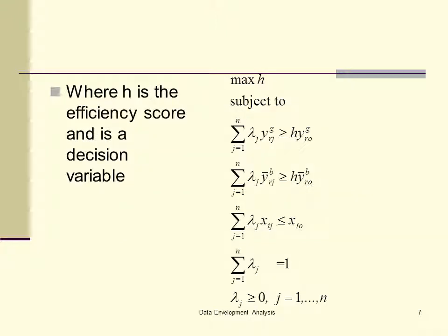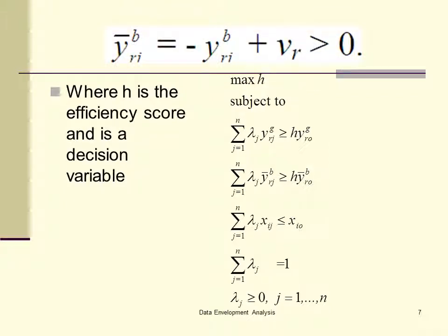This is the model. Here, we use H as the efficiency. So, if you look at the right-hand side, you see two Ys — one set of Y, one set of the outputs. You have a G in there, which means they are the good output, for example, and then the B, the undesirable output. But the Y is the YB. These outputs are transformed by using this linear formula. Now, because of the transformation that's involved, and just like the negative data, the only choice for the model is the VRS model.